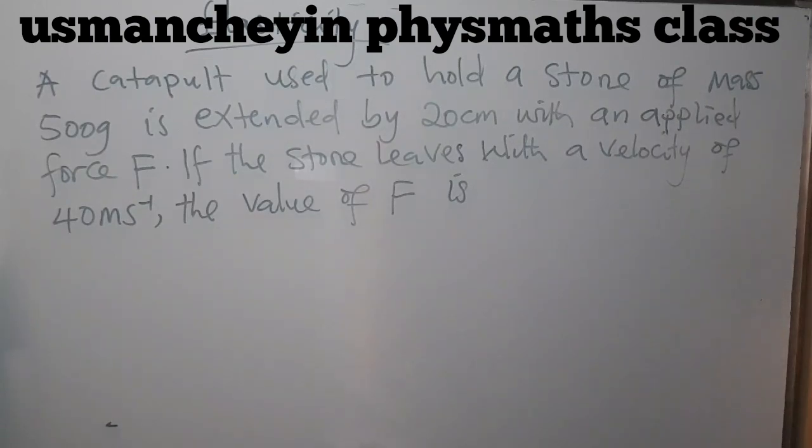Based on this question, a certain force has been applied to the catapult and it has extended to 20 centimeters. And guess what? If the force is released on the catapult, the stone or whatever inside that catapult is going to flip out.